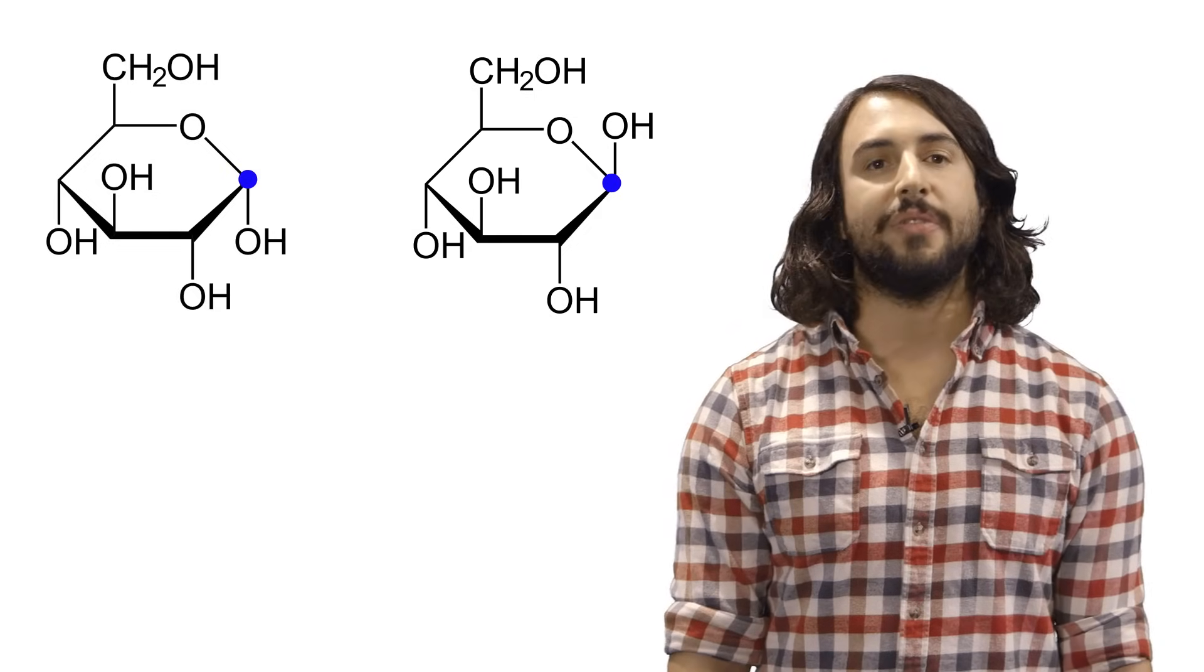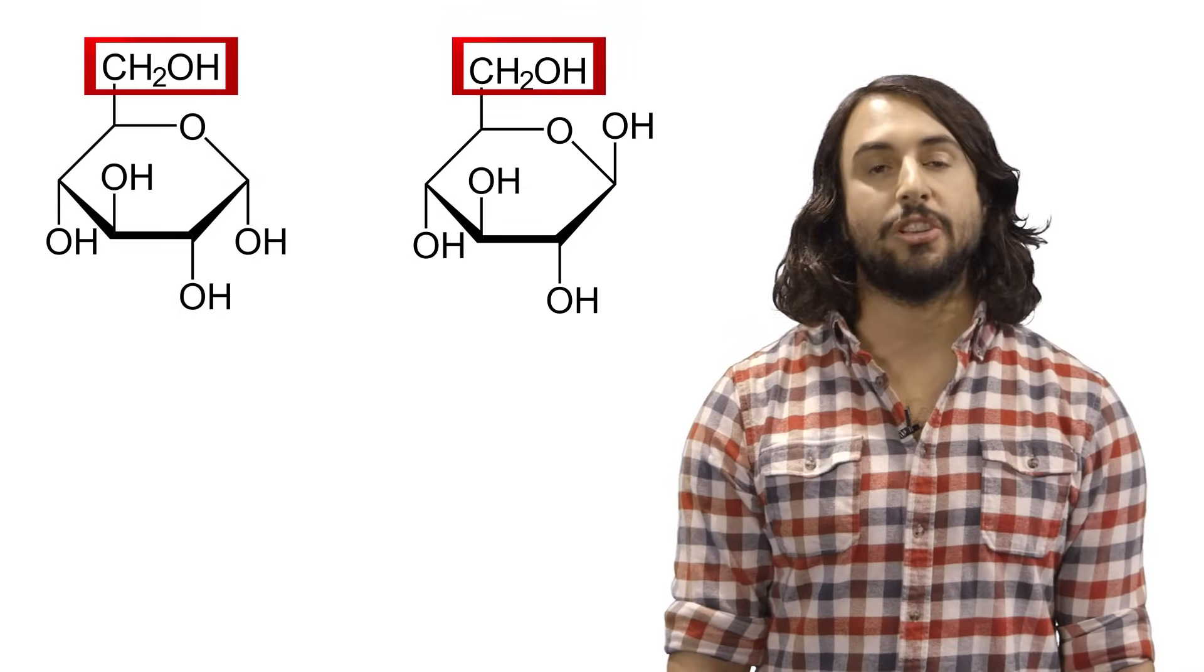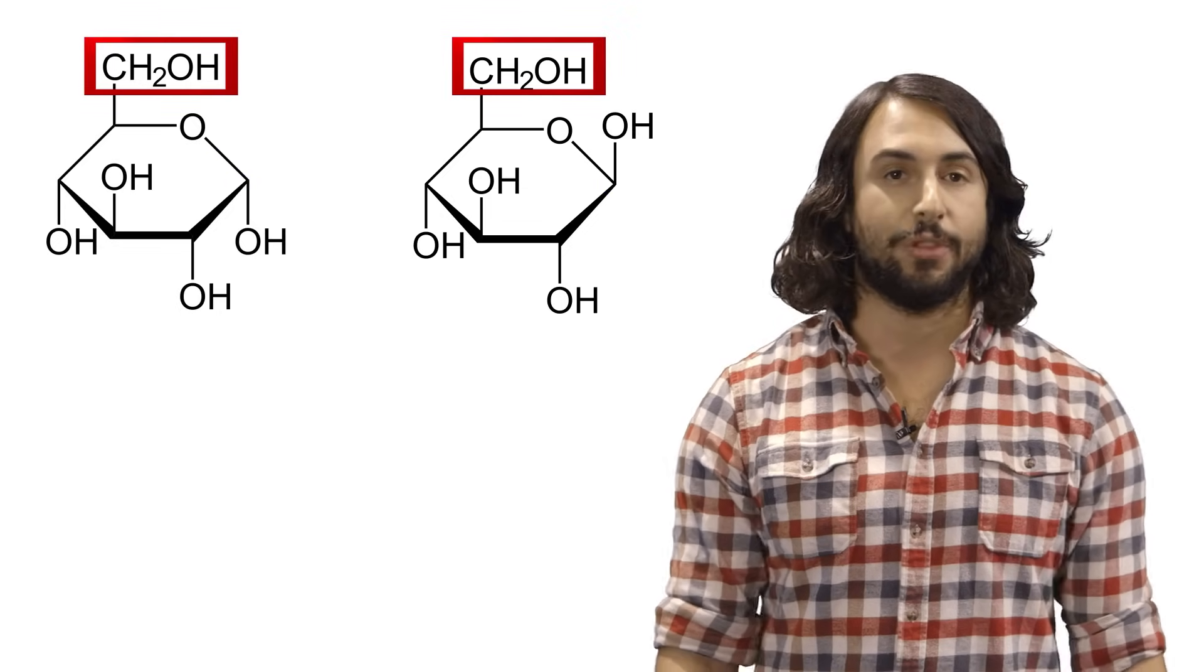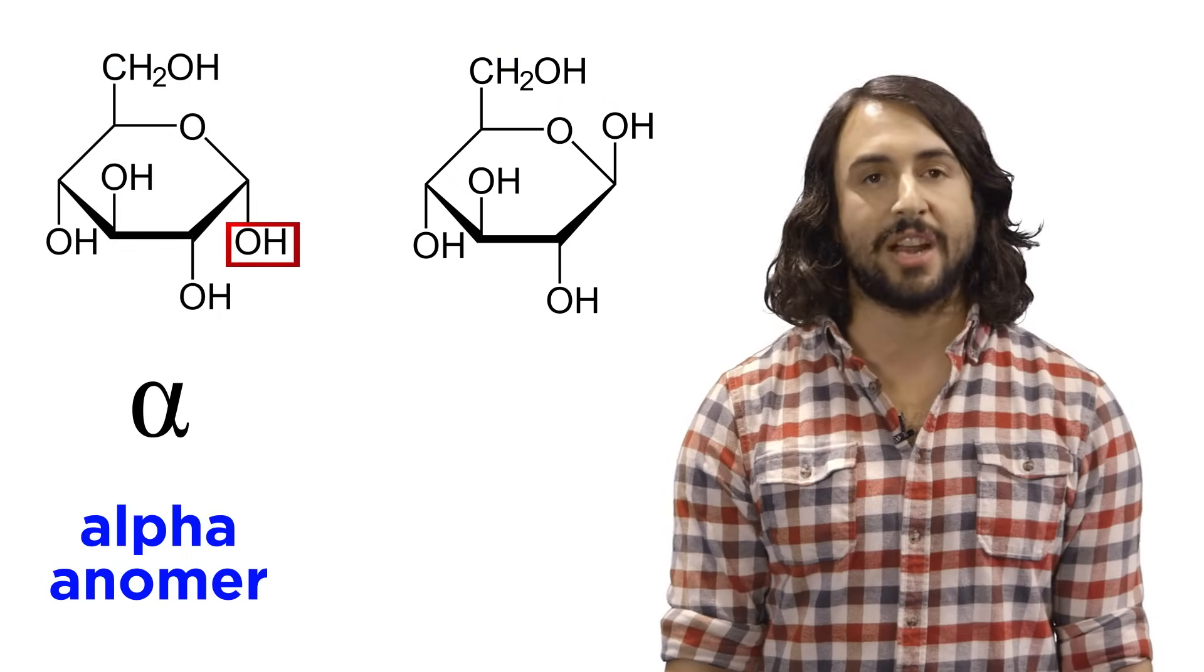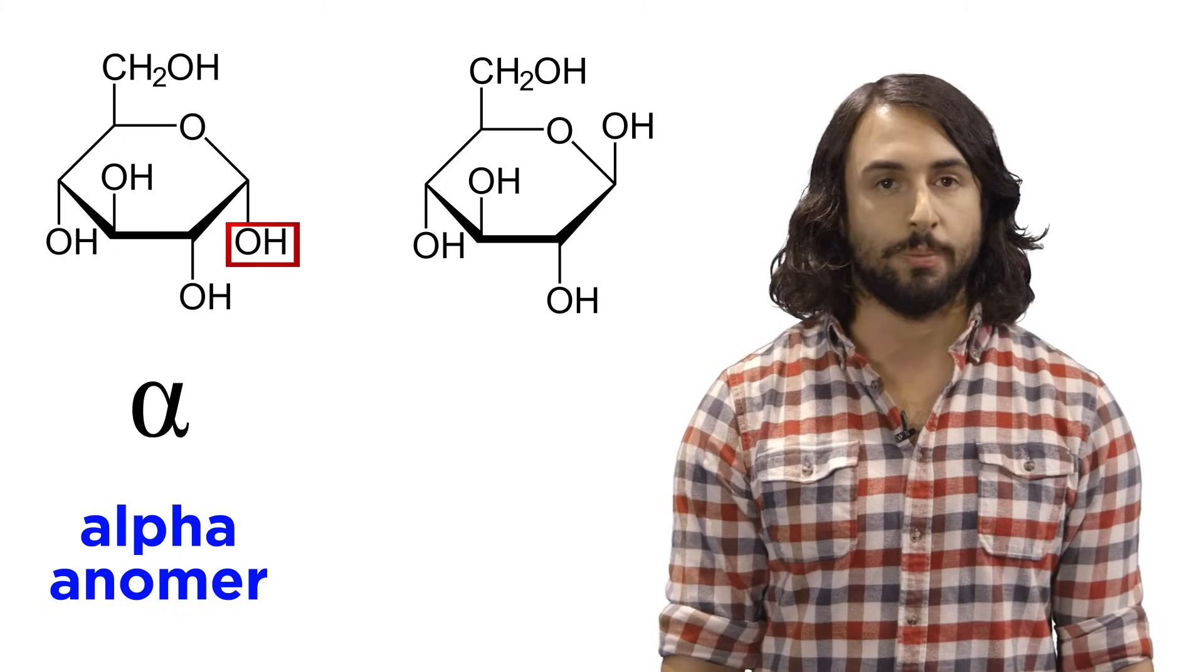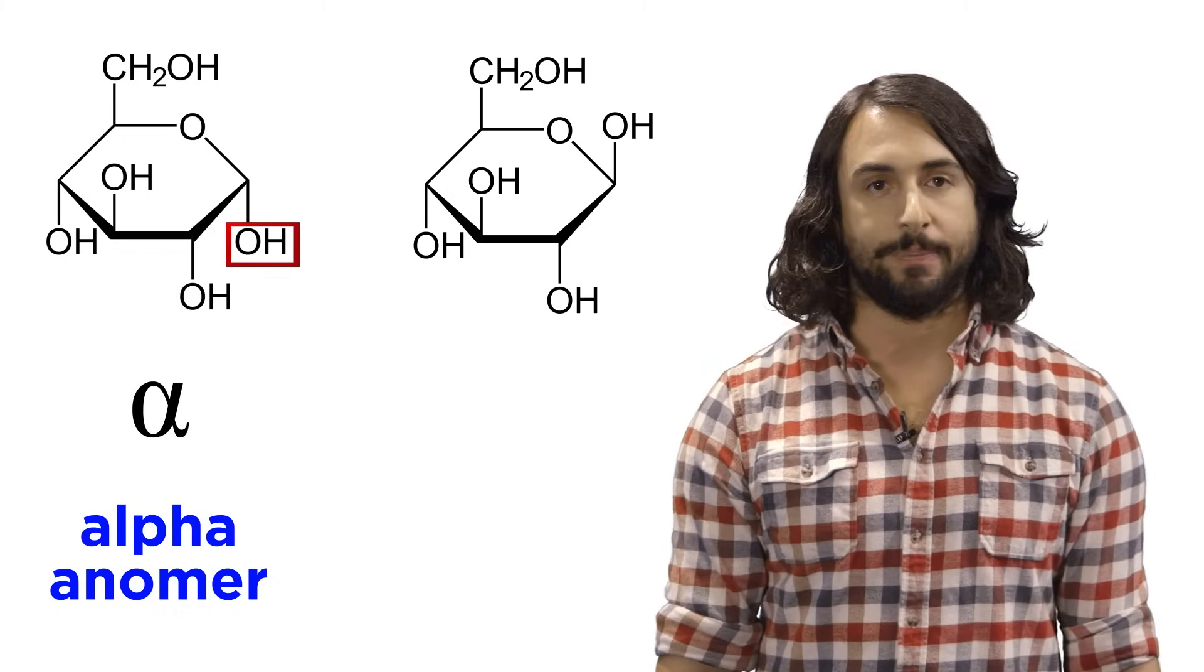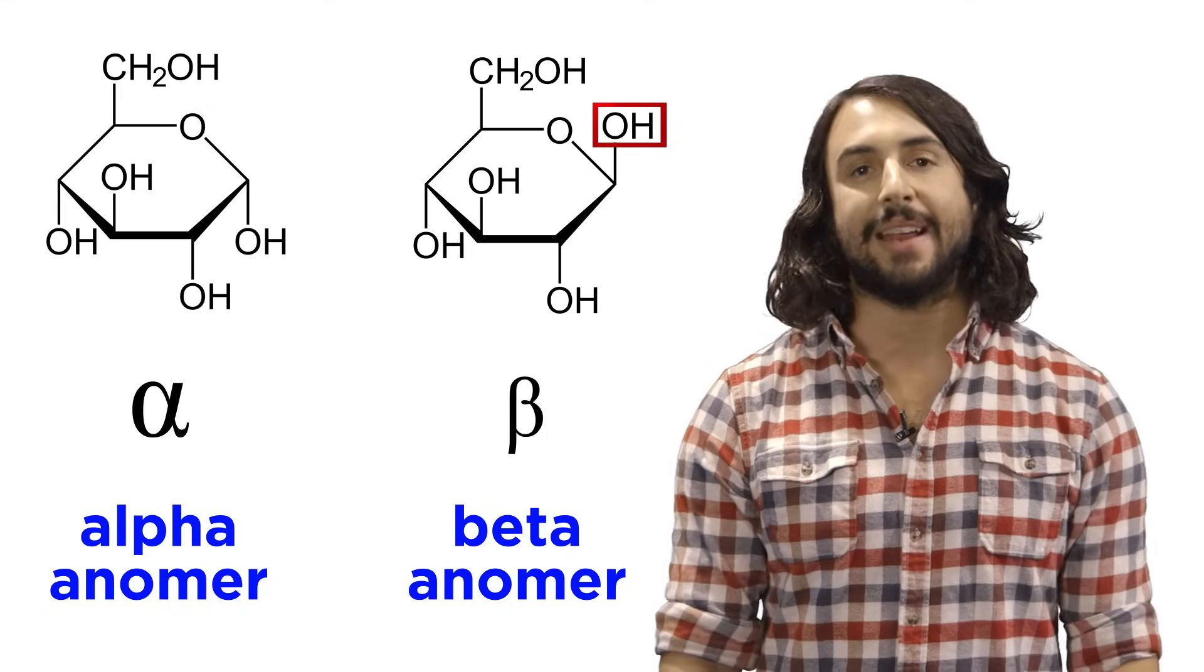When we draw these, the convention is to place the anomeric carbon on the right and the CH2OH on the other side of the ring pointing up. If the new hydroxyl group that was generated during hemiacetal formation points down and is trans to this group, we have the alpha anomer, and if it is pointing up, cis to this group, we have the beta anomer.